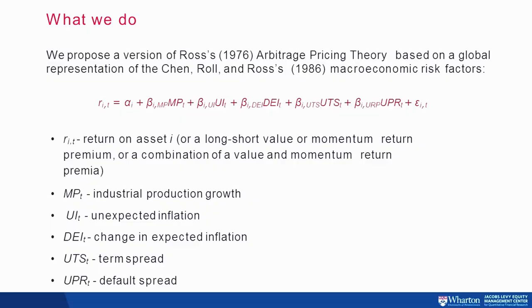There's nothing wrong with their model — they give us a beautiful insight — but what we do in this paper is propose thinking of these strategies in the framework of the Arbitrage Pricing Theory of Steve Ross, and use a global representation of the Chen, Roll, and Ross macroeconomic risk factors. We assume returns are generated by a linear factor model. The factors are: industrial production growth, a measure of unexpected inflation, the change in expected inflation, the difference in term spread, and a measure of default spread. The test assets are value and momentum portfolios.